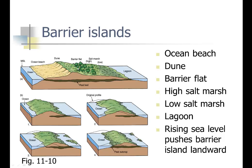Barrier islands look like this if you've been to OBX, the Outer Banks. We have a sand beach on the ocean side, a dune, a barrier flat, a high elevation sea marsh around 20 or 30 feet, and a low elevation around 5 or 6 feet, then a lagoon. If sea level rises, it pushes these things landward. You can tell because the lagoon side is where the vegetation is and it makes peat. As the barrier island progresses landward, the peat eventually moves all the way across.